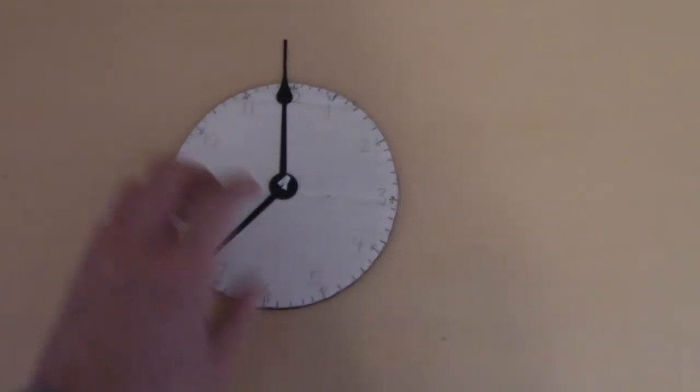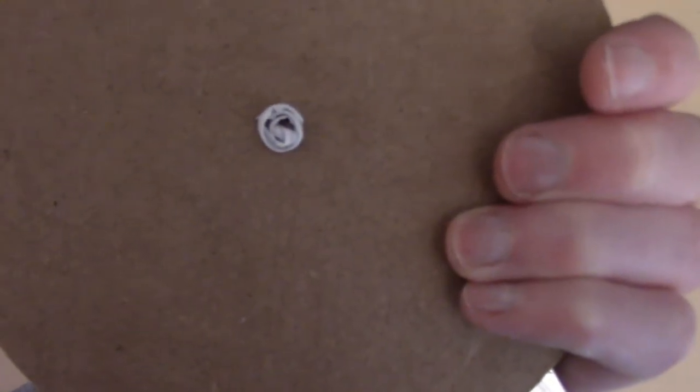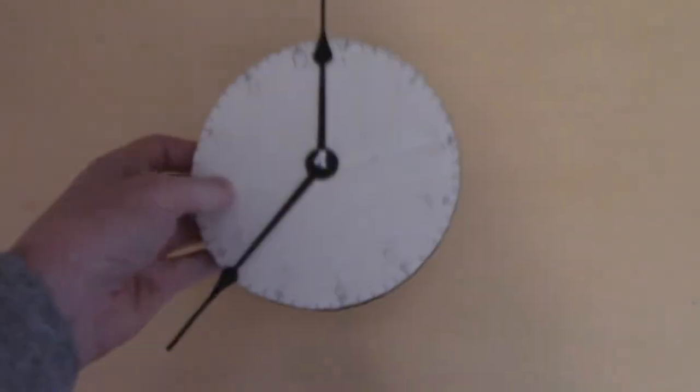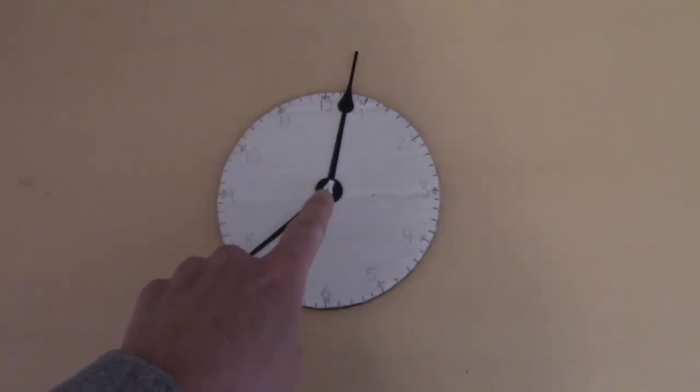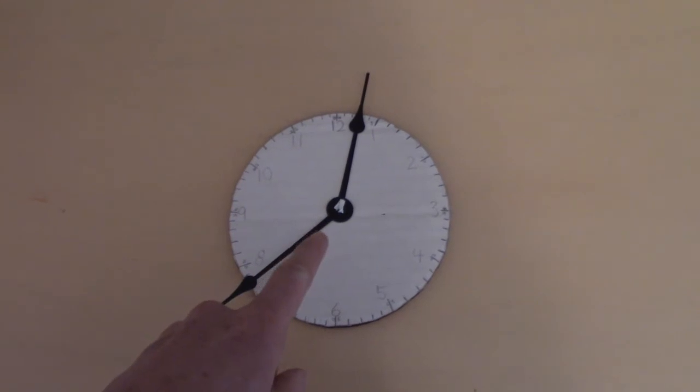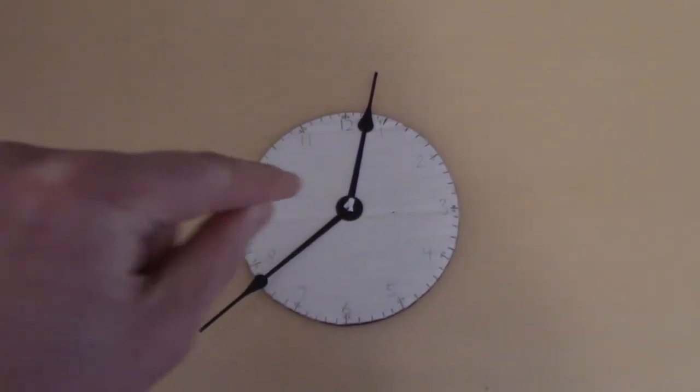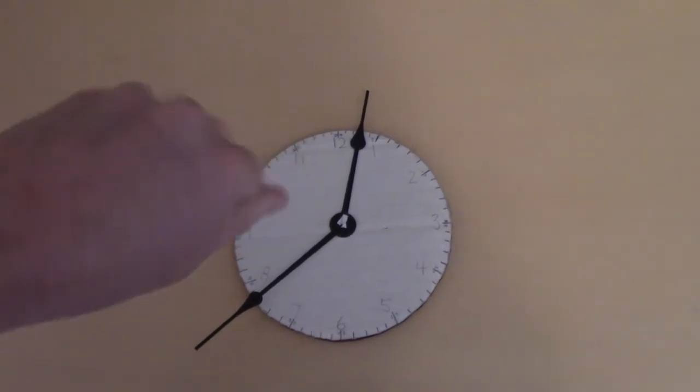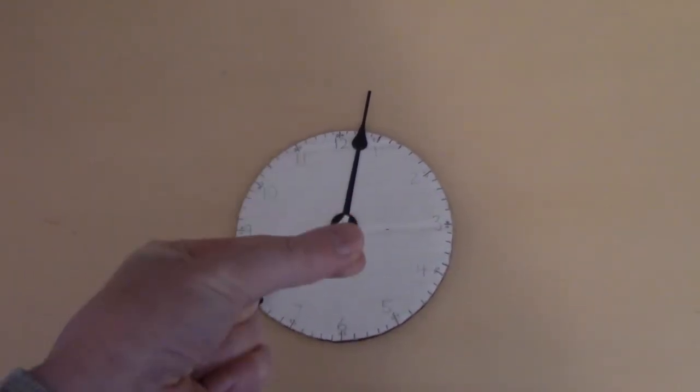For the clock hands, I popped them through the other side and actually used a twisty tie, believe it or not, to secure them. I popped a hole through the center, lined up the hands, pushed them through, twisted the back, and flipped it over.